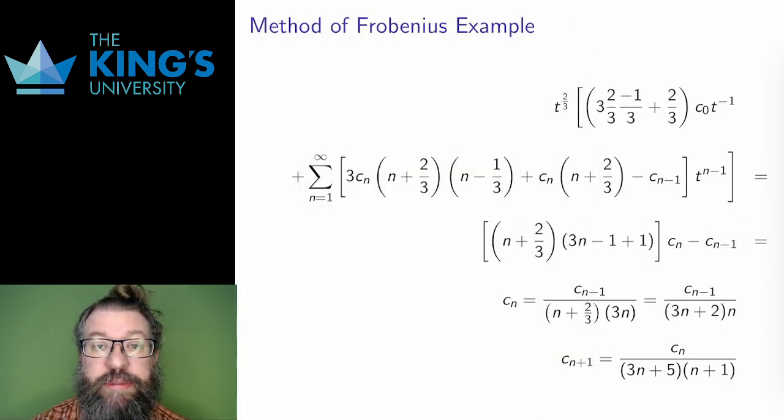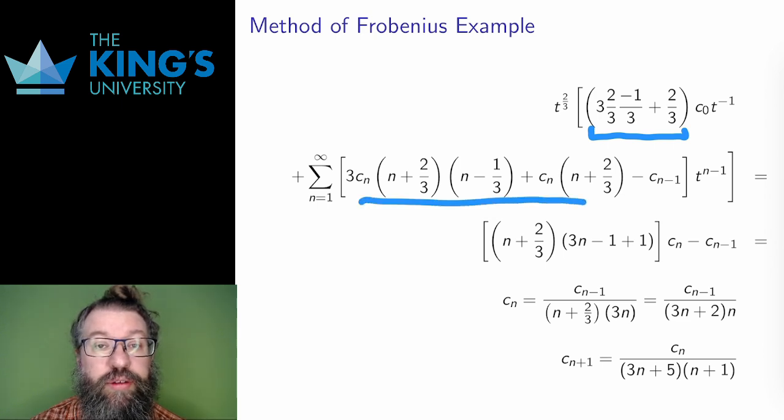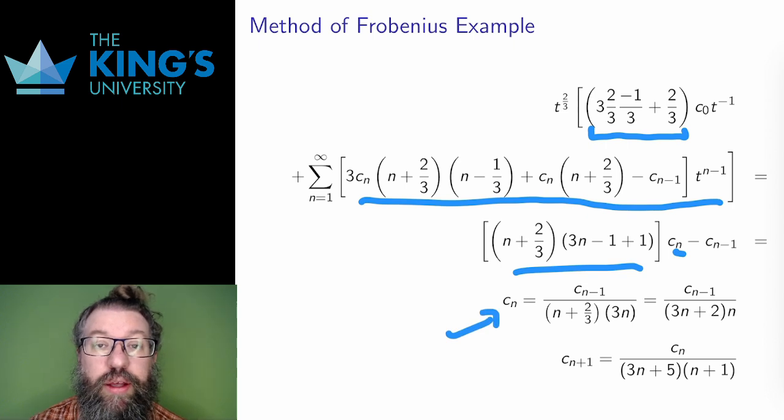These are the two terms I get when I pull out the terms to make the starting bounds match. Both have c₀ t⁻¹ with these coefficients. I group the remaining pieces into one series. Then I factor cₙ out of these two and do some arithmetic to simplify the equation. Then I solve for cₙ to get the recurrence relation, again doing some algebra to try and make the relation as reasonable as possible to work with.